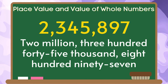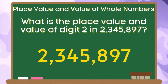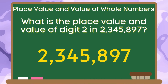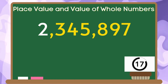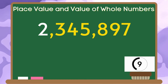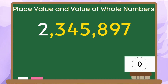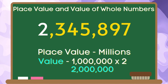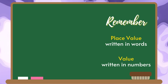Let's have the last example: 2,345,897. What is the place value and value of digit 2 in 2,345,897? The place value of 2 is millions, and the value of 2 is 2,000,000. Again, remember that the place value is written in words while value is written in numbers.